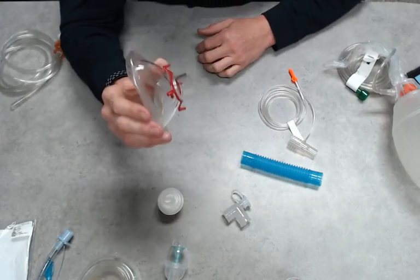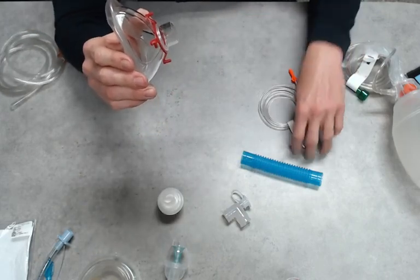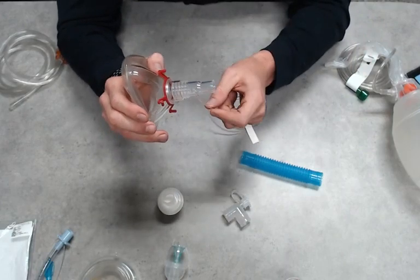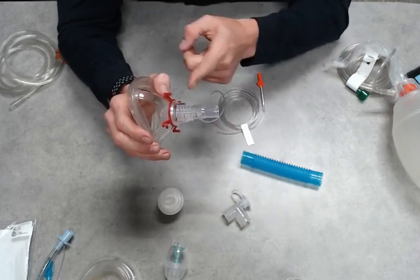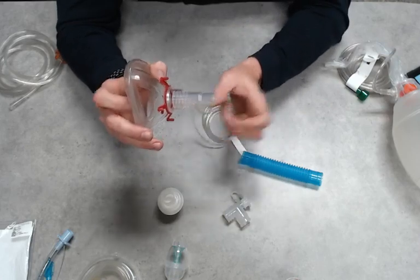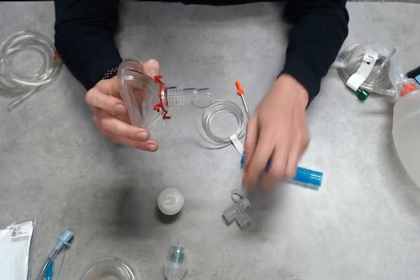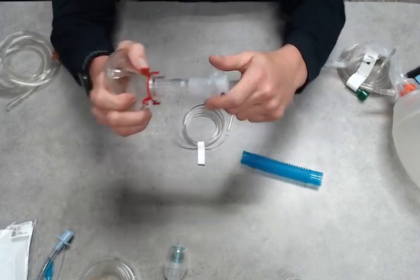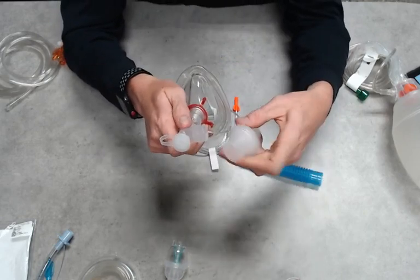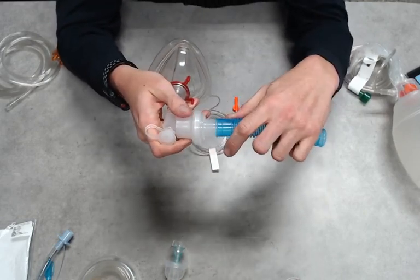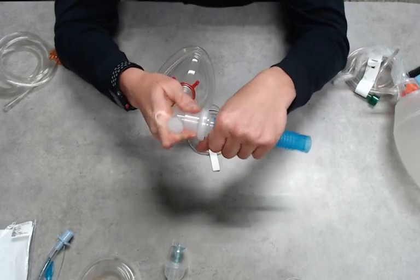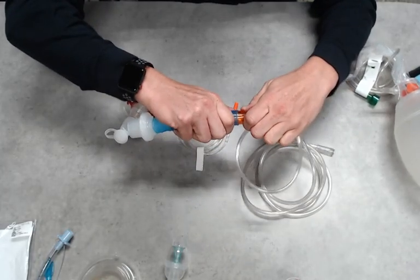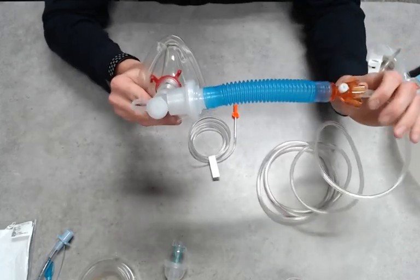So we're going to try to slow down just a second to set this up. We're going to start with our mask. We're going to have our end-tidal. Again, end-tidal should be the first thing that they breathe into, so that will give us the truest reading. Nothing gets scrubbed out throughout the rest of the circuit. So we're going to add the elbow, now we're going to add our filter, flex tubing, nice snug fittings, and then we're going to add our CPAP.